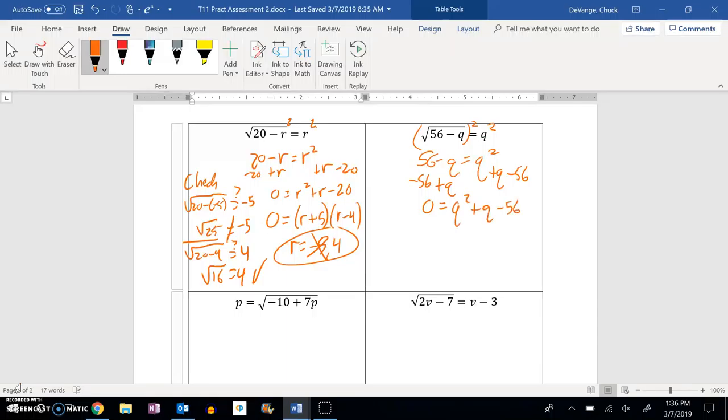And now I'm looking for things that multiply to 56 but add to positive 1. And I think that's going to be 8 and negative 7. So Q plus 8 and Q minus 7 equals 0.